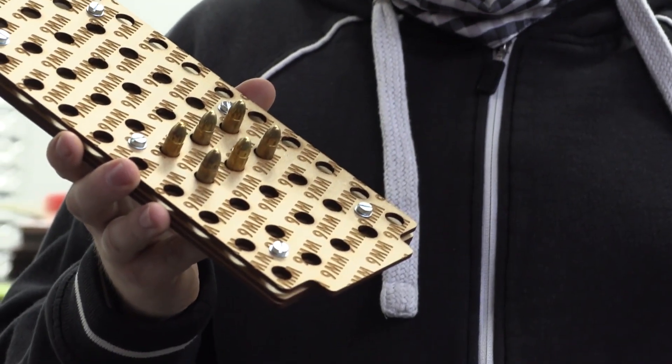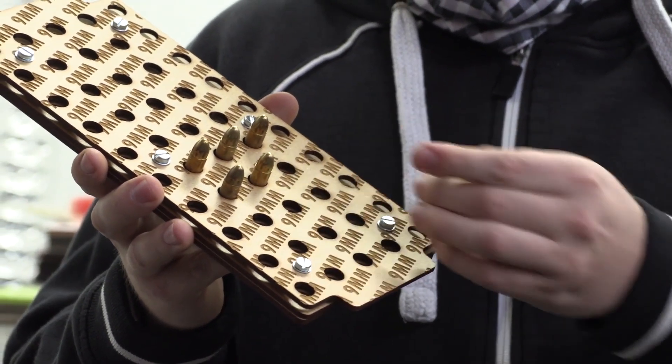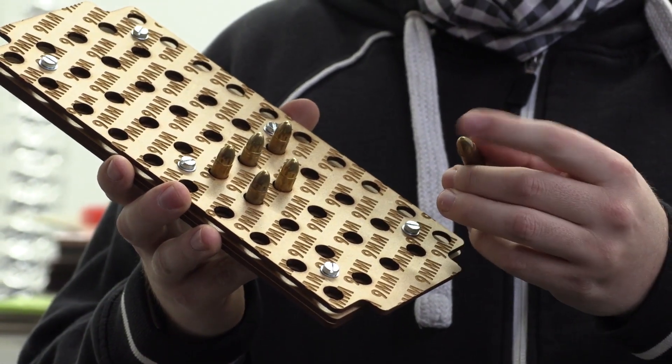Here we have a gun reloading tray for a 9mm bullet. Basically, this tray is going to hold the bullet after we put powder inside, before we put the head in to complete the bullet.